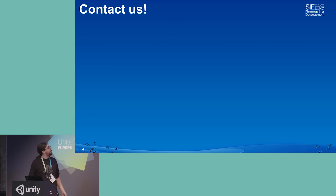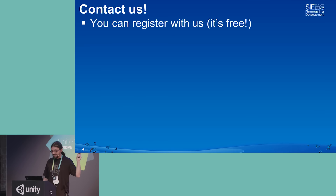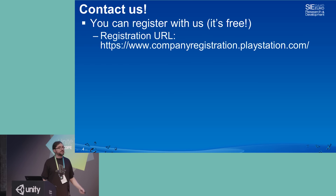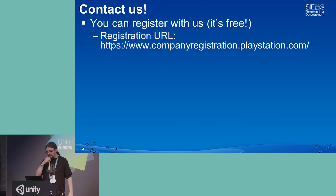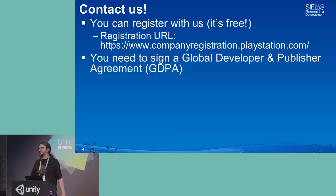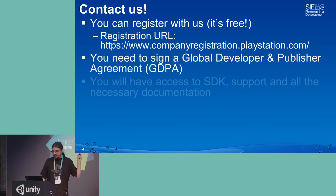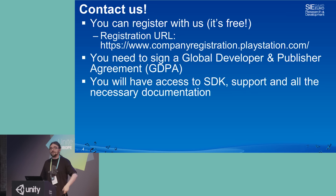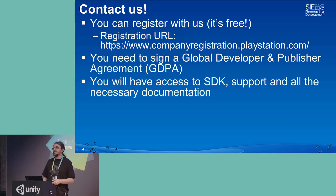How do you register? It's free, first of all, which is always good. The URL is companyregistration.playstation.com. You go on this website, you register, and you sign some paperwork we call the Global Developer and Publisher Agreement. Once you are a fully registered developer, you will have access to the full SDK, full support, full documentation, and you will enter the magic world of our support website.